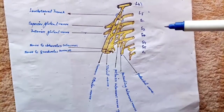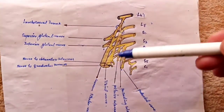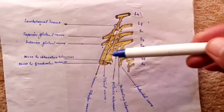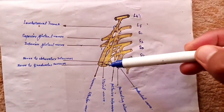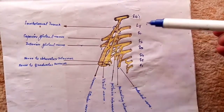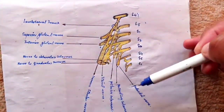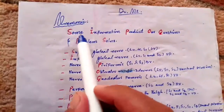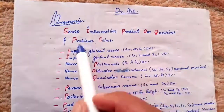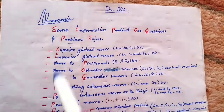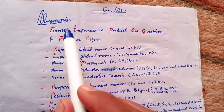The ventral division gives rise to the nerve to obturator internus, the nerve to quadratus femoris, the tibial portion of the sciatic nerve, and the pudendal nerve. The mnemonic for memorizing these nerves is: 'Some Information Predicts Our Questions And Problem Solution.'